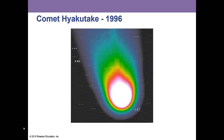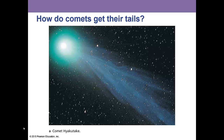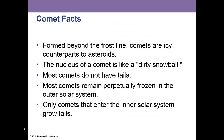During the week of closest approach, this comet got 9.3 million miles away from Earth — extremely close. Comets form beyond the frost line and are icy counterparts to the asteroids. The nucleus of a comet is likely a dirty snowball. Most comets do not have tails until they get close to the sun; most remain perpetually frozen in the outer solar system, and only comets that enter the inner solar system grow tails.